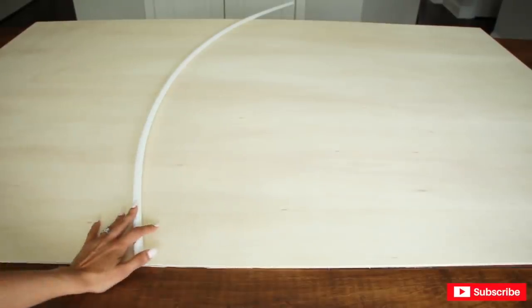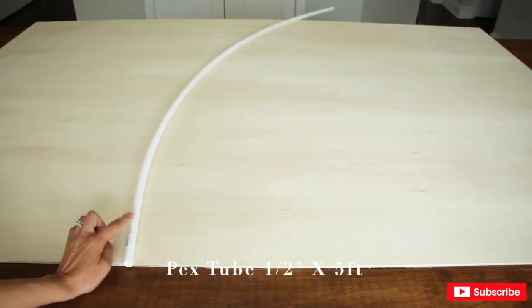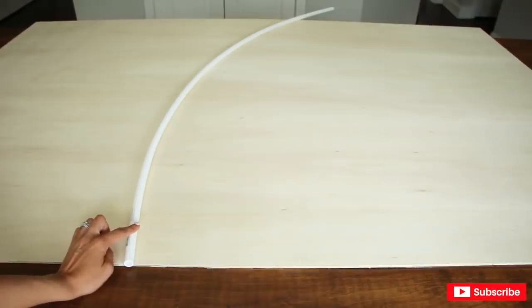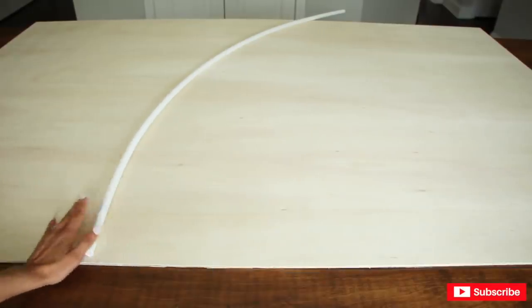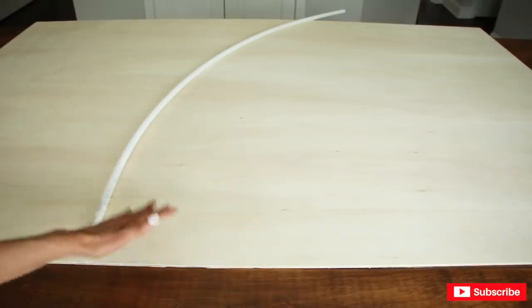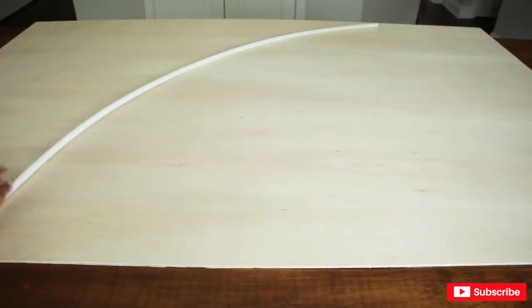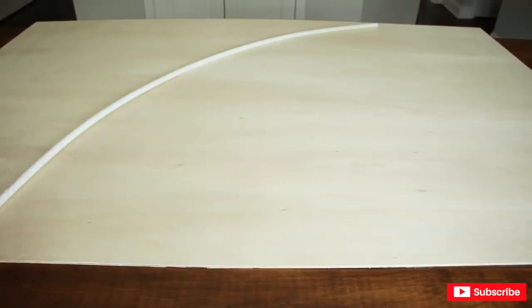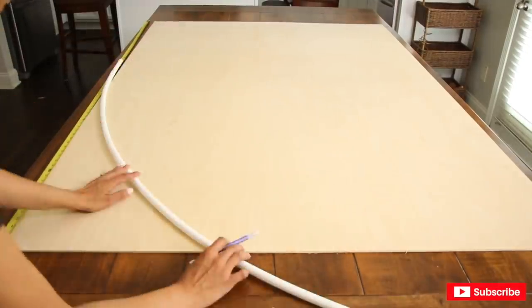I'll use a piece of PEX tube, half an inch by five feet—well, it used to be. This is leftover from another project, so it's only half. When you buy the PEX tube, twist it into a half moon and trace around it. Since I only have half, I'm going to trace one half and then trace the other half.